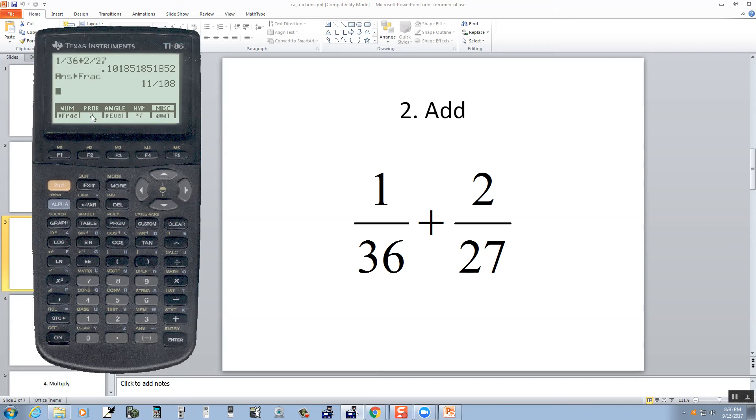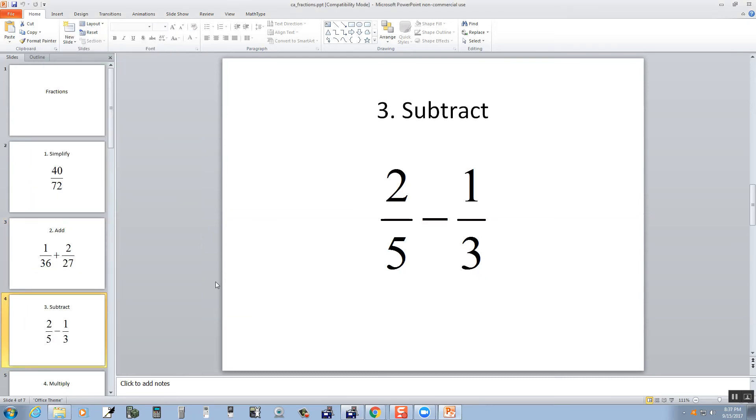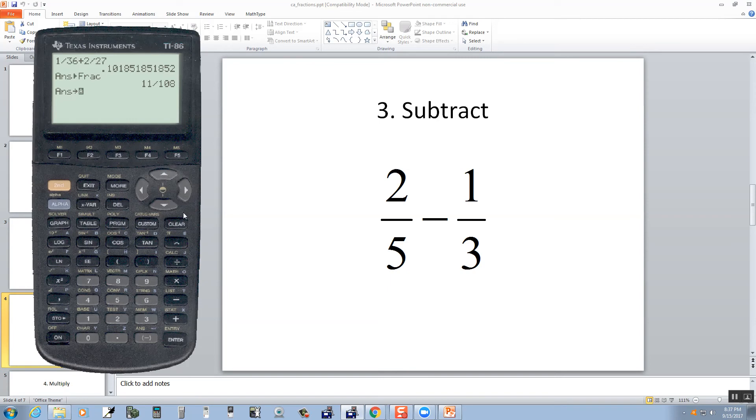Now let me do exit to drop one of these menus off and exit to bring another one off. And let's take a look at subtraction. So I've got 2 divided by 5 minus 1 divided by 3. Enter.